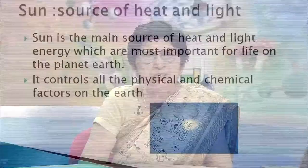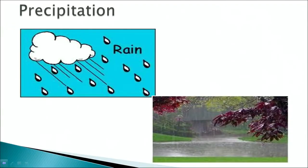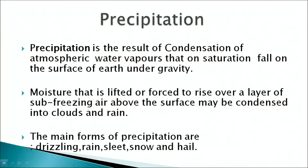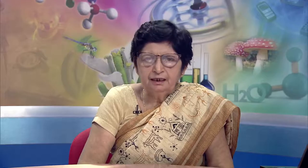The sun is the main source of heat and light energy, which are most important for life on planet earth. It controls all the physical and chemical factors on earth. Precipitation is the result of condensation of atmospheric water vapors that fall on the surface of earth under gravity. Moisture forced to rise may condense into clouds and rain. The main forms of precipitation are drizzling, rain, sleet, snow and hail.